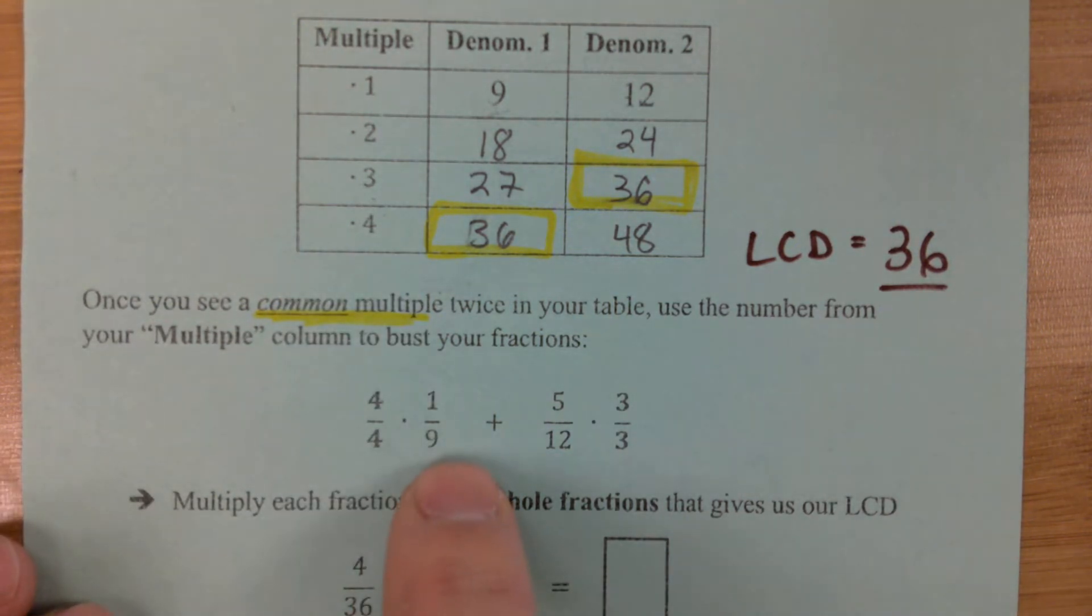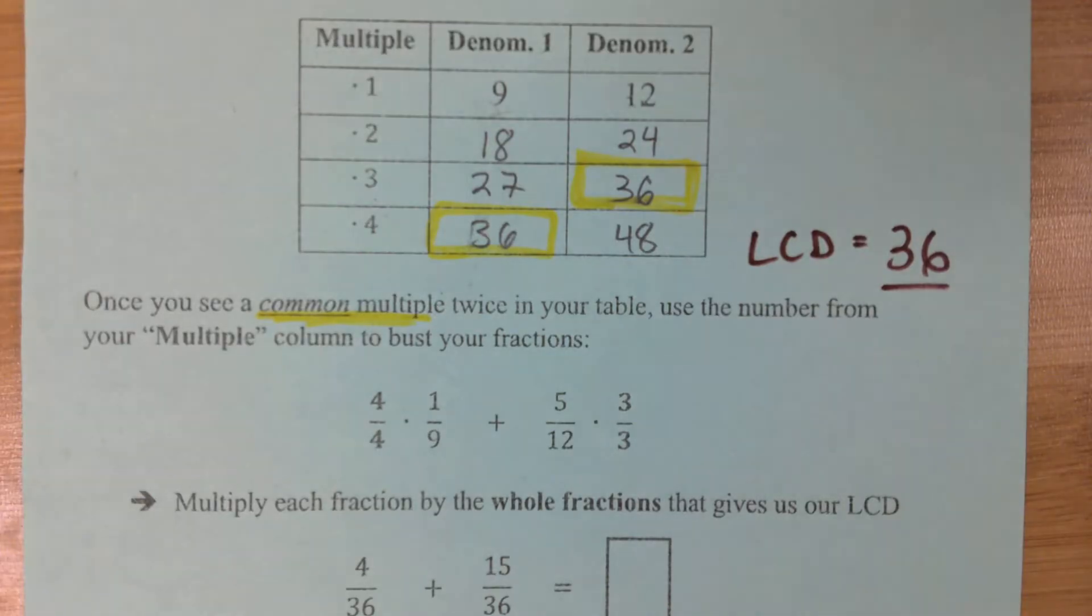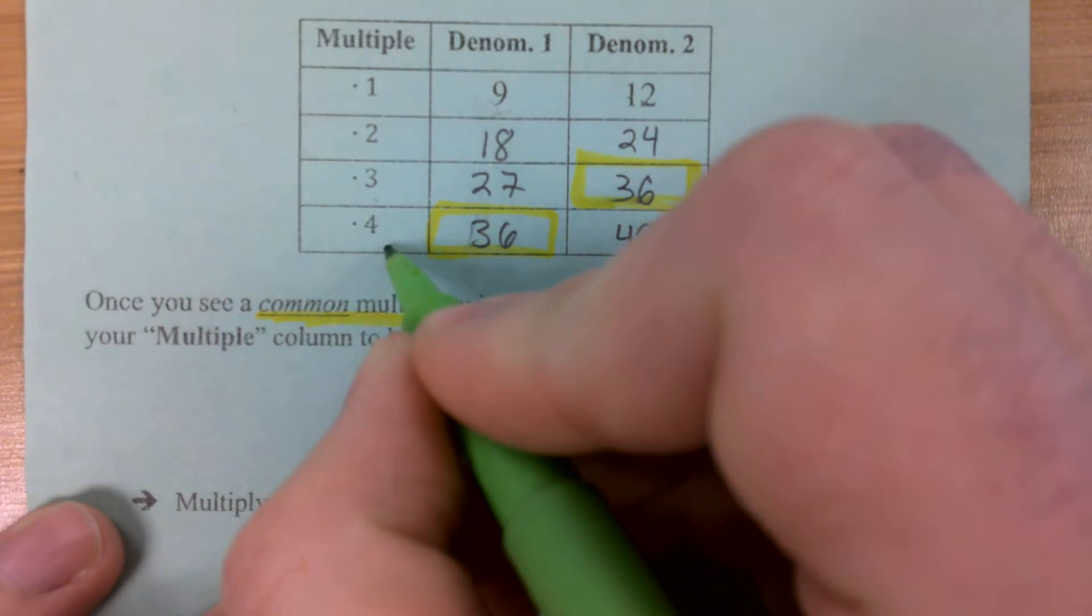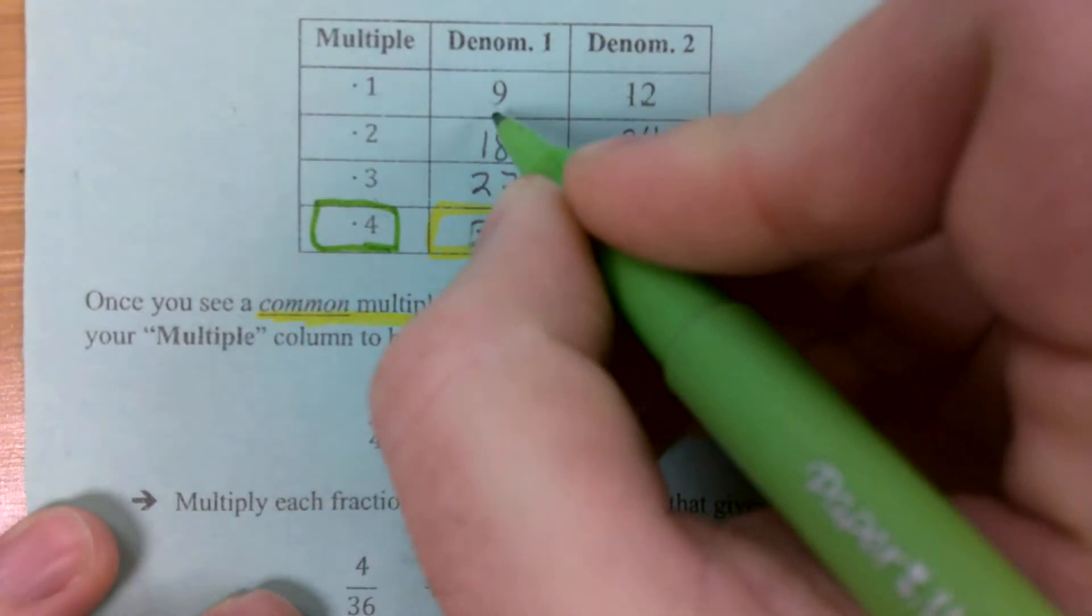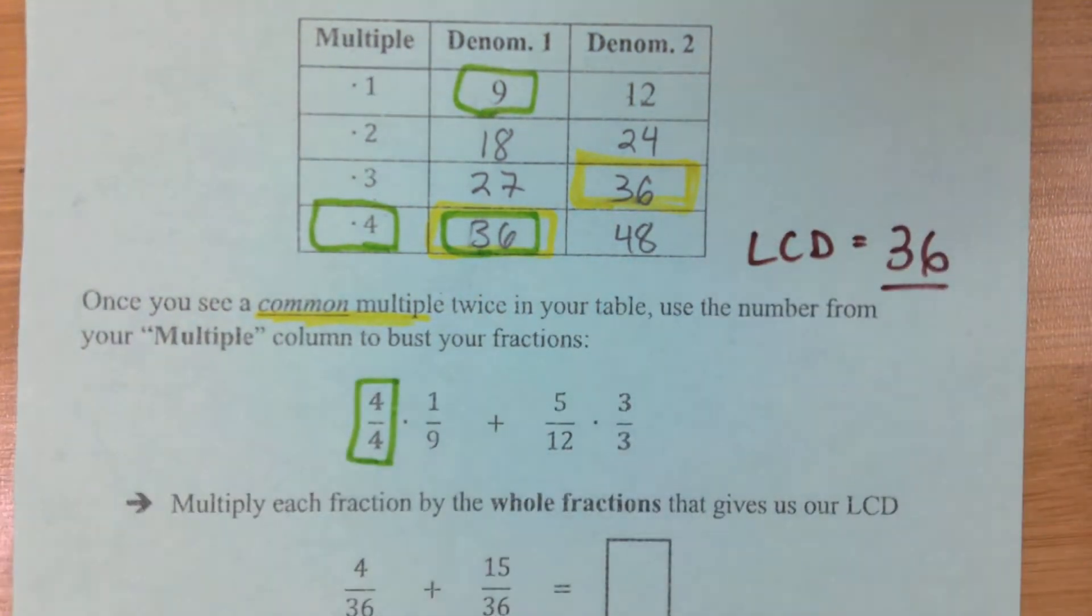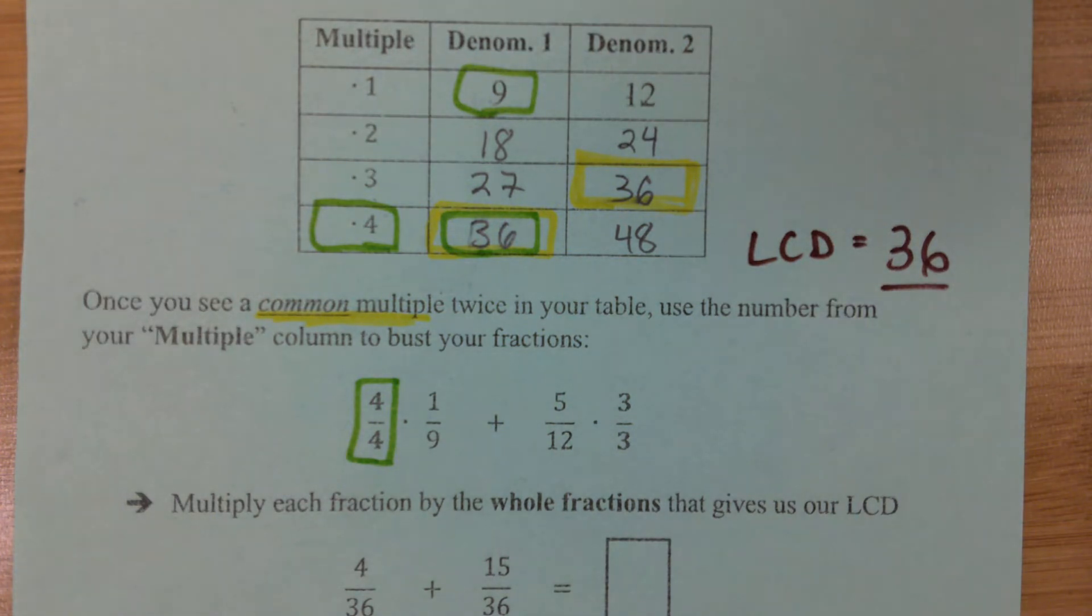Now we know we're going to have to take 1 over 9 and multiply it by 4 over 4. Why are we multiplying the fraction by 4 over 4 instead of just multiplying it by 4? Anyone have an idea? Theo? I forgot how to explain it differently. Well, that's okay. What is 4 over 4 equal to? 1. Right? Does the number technically change when we multiply it by 1? No.